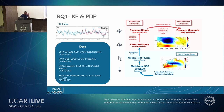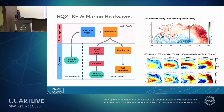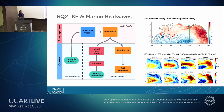That is a basic understanding of my first research question. For my second research question, we found that the large-scale variability of Kuroshio Extension also supports sea surface temperature anomalies in the Gulf of Alaska region in the northeast Pacific, which is similar to the recent marine heat wave event observed in 2014 and 2015, which we call the BLOB.